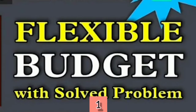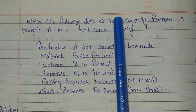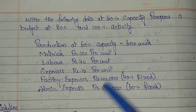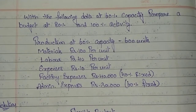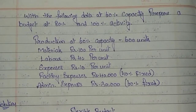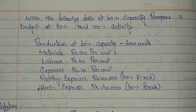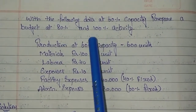Hello everyone, welcome back. In this video I am going to explain how to prepare the flexible budget. The problem provides data at 60% capacity, and we have to prepare a budget at 80% and 100% activity.